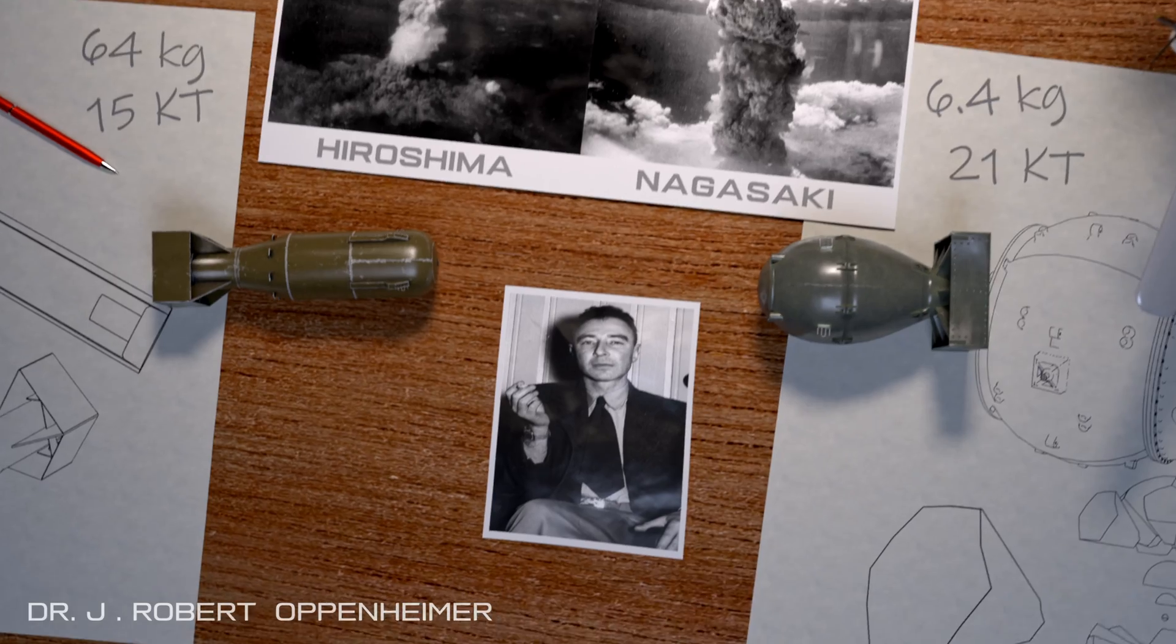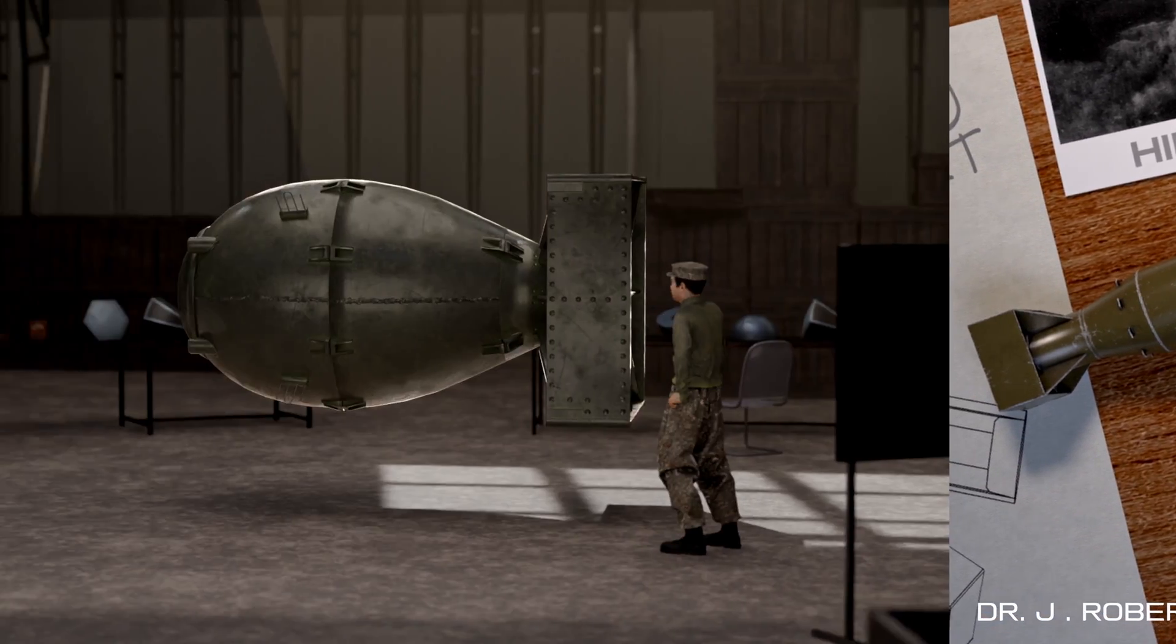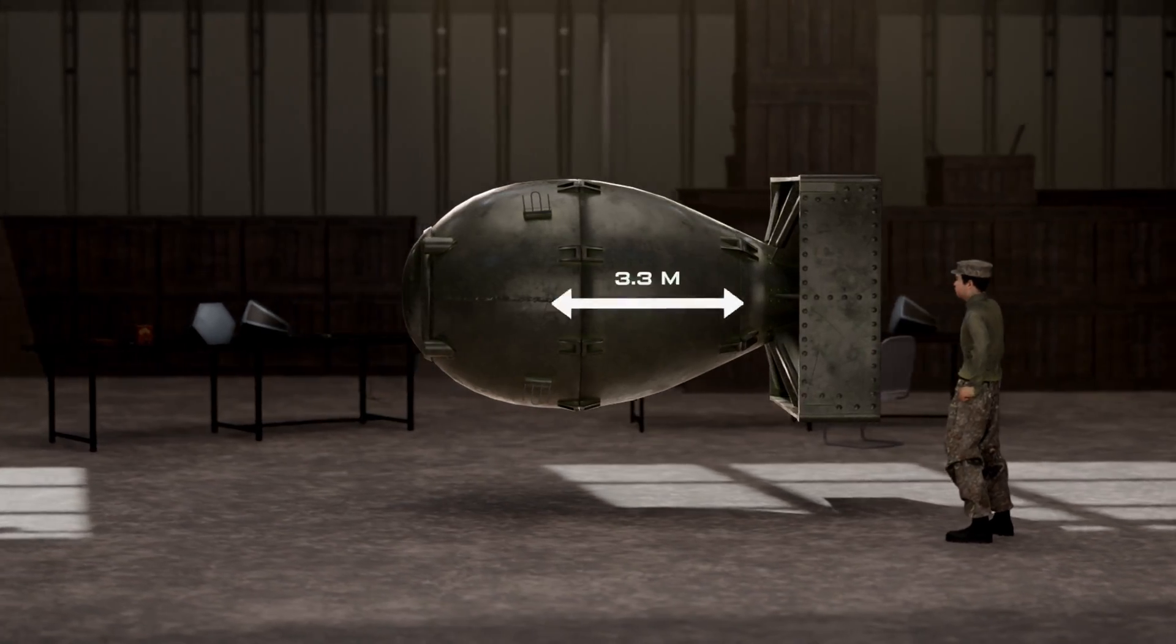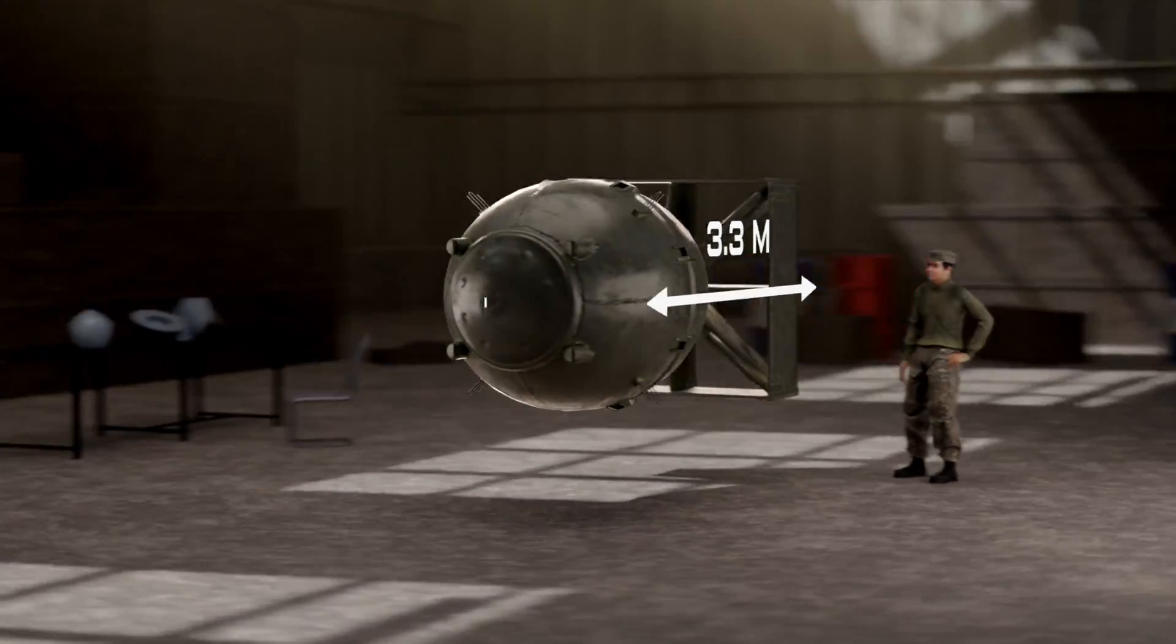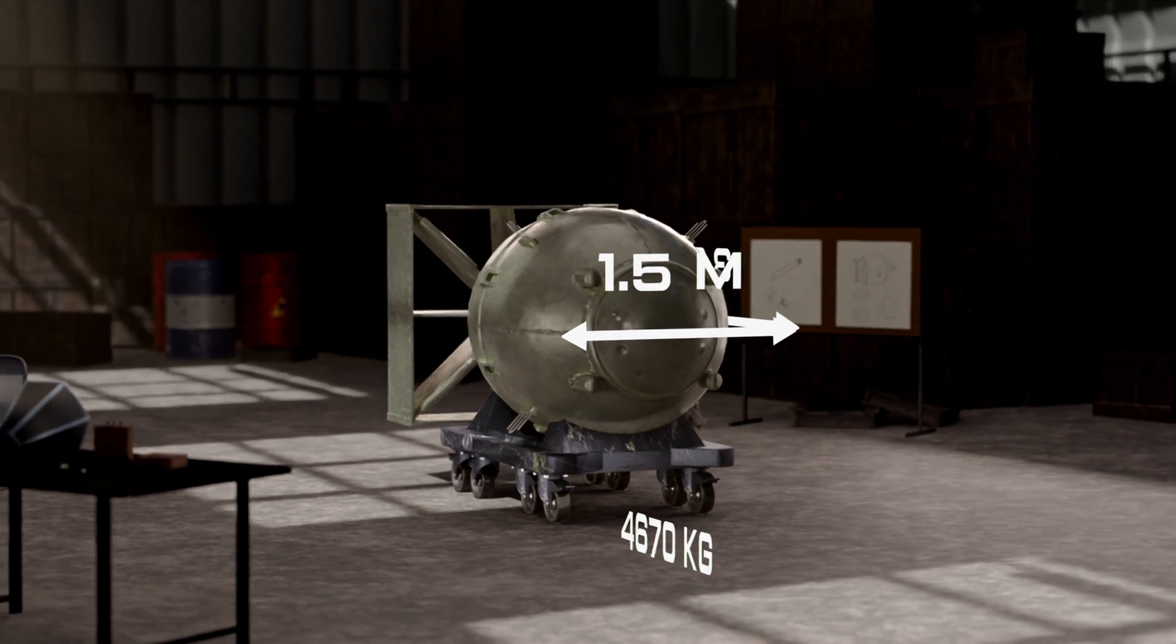Dr. J. Robert Oppenheimer was one of the lead scientists who developed these atomic bombs. The dimensions of Fatman are 3.3 meters in length, 1.5 meters in diameter, and it weighs nearly 4,670 kilograms.